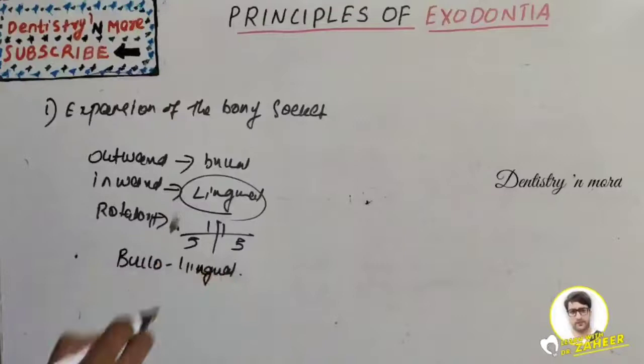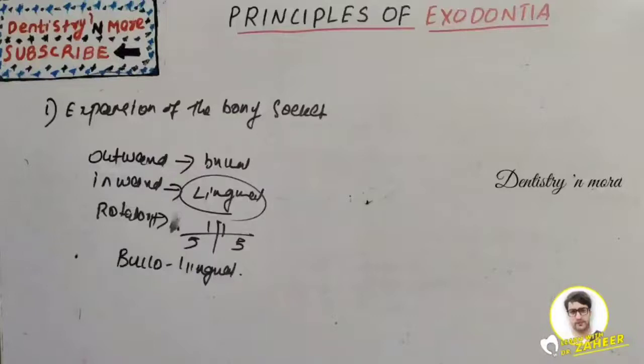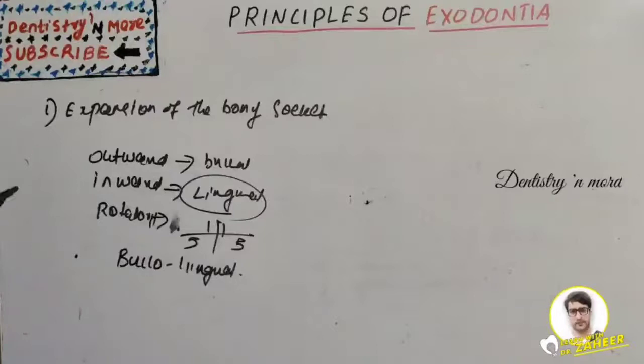Once the alveolar bone has expanded sufficiently and the tooth has been laxated, slight traction forces should be applied, usually directed buccally. The final moment is when the tooth is removed from the bony socket — it should always be directed outward and occlusal to avoid traumatizing the opposite tooth. The extraction forceps blade should be applied to the caries side first, and the first movement made towards the caries.